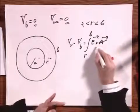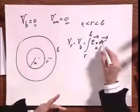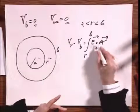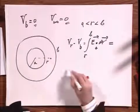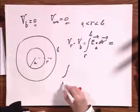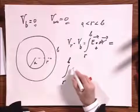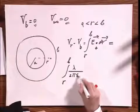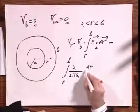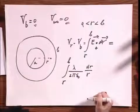The dot becomes a plus one, because the angle between E and dr is plus one, so I don't have to worry about that. And so that becomes the integral, in going from R to B, of lambda divided by 2 pi epsilon zero, dr over r.